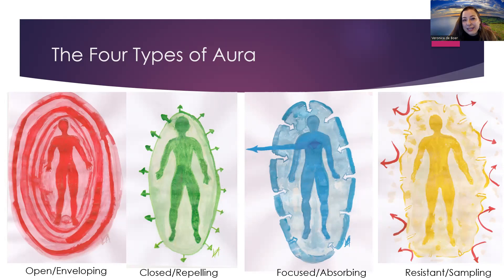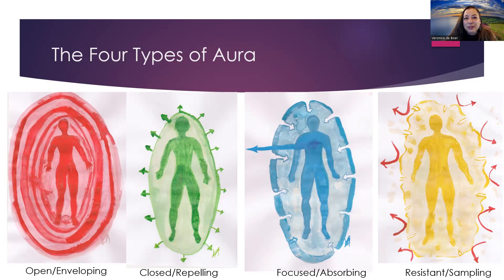These are the four aura types, and this is where the strategy of different types comes from. For the Reflector, the strategy is to wait the lunar cycle — they are the lunar beings, connected to the moon. The moon reflects sunlight and there is a dark side of the moon, so it takes time for the Reflector to sample both sides before taking their decision. The four strategies are: to respond, to wait for invitation, to inform before acting, and to wait for the lunar cycle.